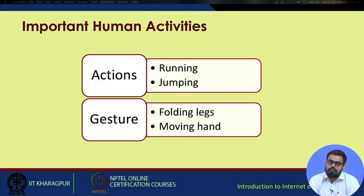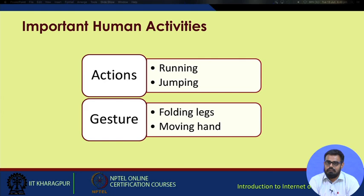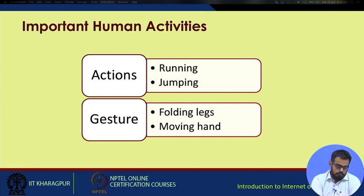Some of the basic human activities that market-available devices can distinguish: for actions, they can distinguish between running, jumping, lying down, and sitting. For gestures, they can detect if a person is folding their legs or moving their hands. Suppose a person is dancing — that would be considered an action but gestures are involved too. Maybe a person is dancing peacefully or aggressively — you can detect that using gestures, and maybe predict the intent of a person, whether someone is threatening or trying to please someone.